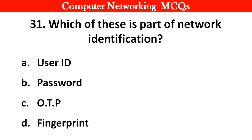Question 31: Which of these is part of network identification? Options: A. User ID, B. Password, C. OTP, D. Fingerprint. Right answer is option A: User ID.